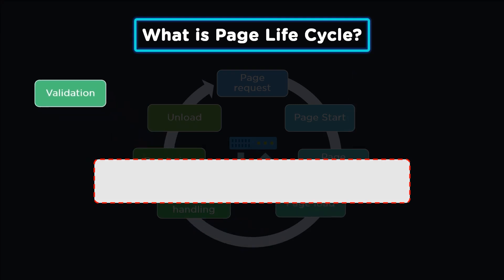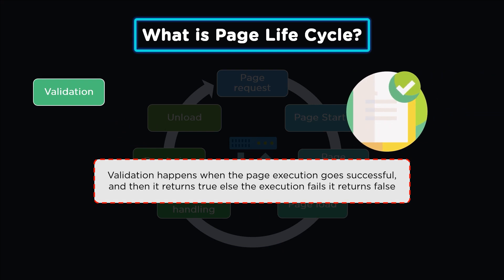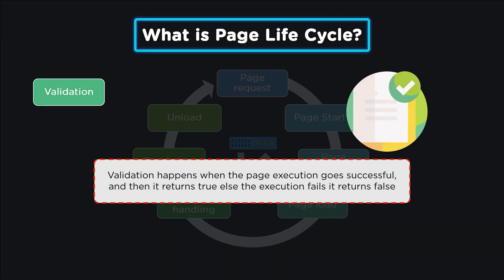The fifth phase of the page life cycle is validation. When a page is executed, the result is provided in the form of two conditions: true and false. If the execution is successful, the result is true; while if there is an error in execution, it returns false.